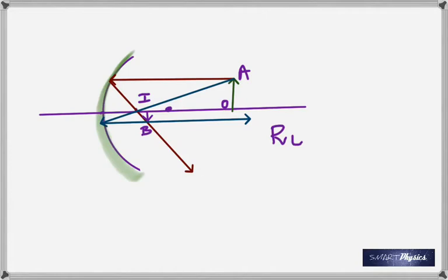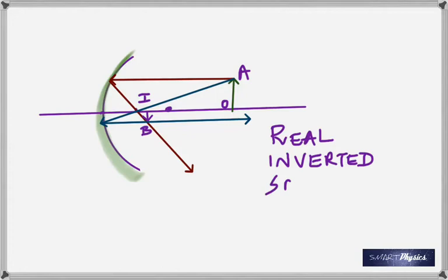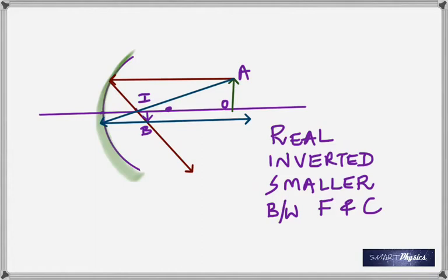When the object is at C, the image is also at C — it's real, inverted, the same size (or diminished in this example), and between the focus and center of curvature.